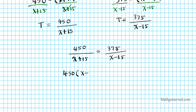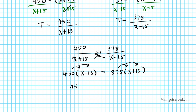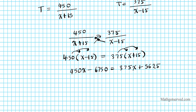I solve this by cross-multiplying. We get 450 times (x − 15) equals 375 times (x + 15). Distributing both sides gives: 450x − 6,750 equals 375x + 5,625. To get all variables on one side and all constants on the other, I subtract 375x from both sides and add 6,750 to both sides, using the properties of equality.